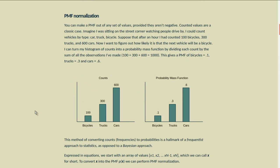You can make a probability mass function out of any set of values, provided they aren't negative. Counted values are a classic case. So if you imagine I was sitting on a street corner watching people drive by, I could count vehicles by type, car, truck, bicycle. So suppose after an hour I had counted 100 bicycles, 300 trucks, and 600 cars.